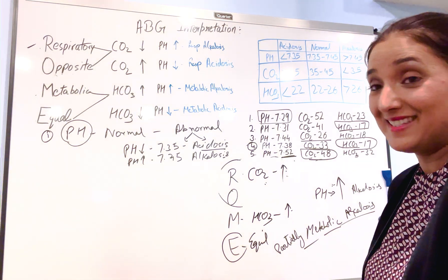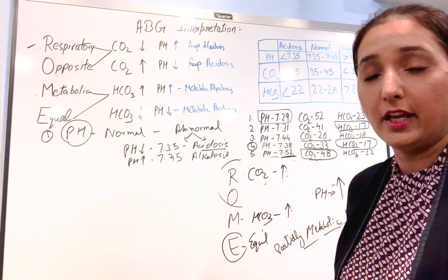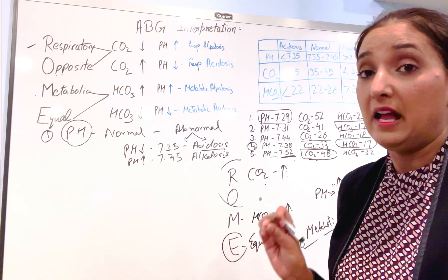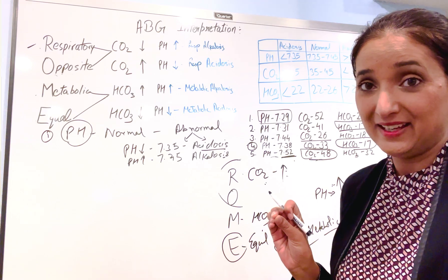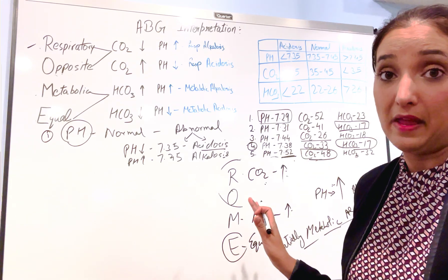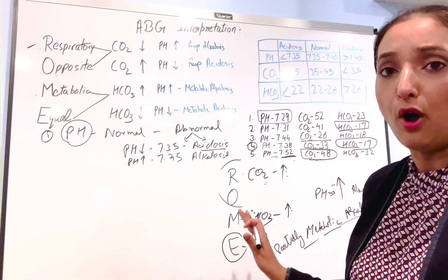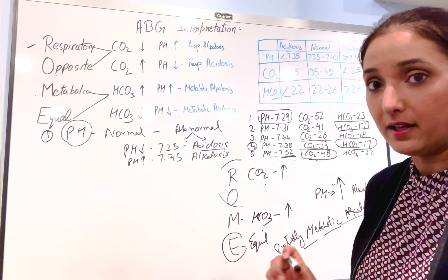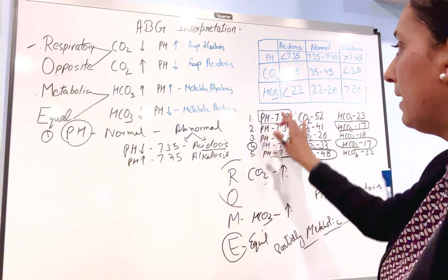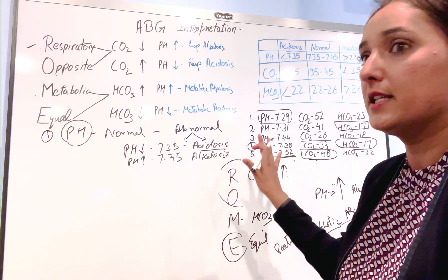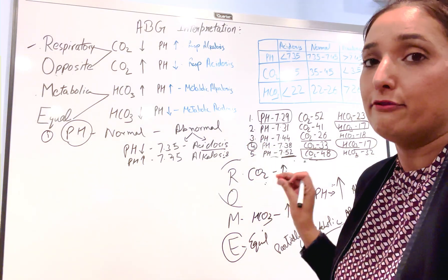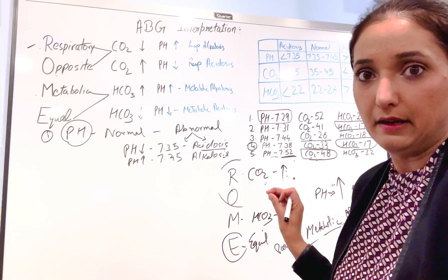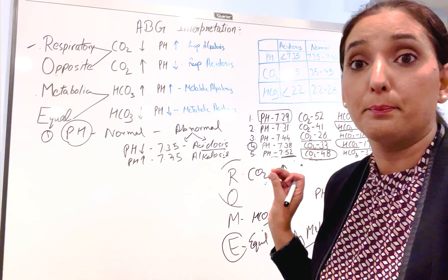Hope I helped you understand how we use the ROME method. Once you've got this ROME method, there won't be any ABG question you can't answer correctly. This is one of the easiest methods to solve ABG interpretations. To review quickly: we learned when it is partially compensated, when it is uncompensated, and when it is fully compensated — you can see all of this just from the pH.